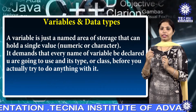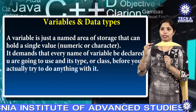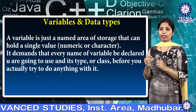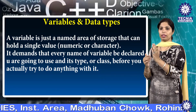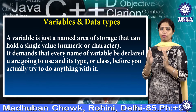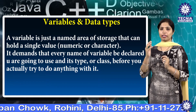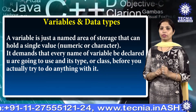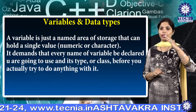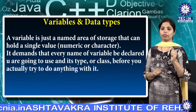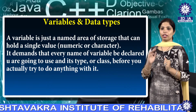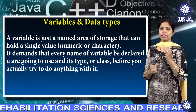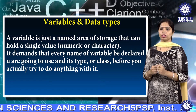Next, let's discuss a variable. A variable is a data name that may be used to store a data value. A variable is a named location in memory that is used to hold a value that can be modified by the program. A variable may take different values at different times during the execution of the program. All variables must be declared before they can be used.